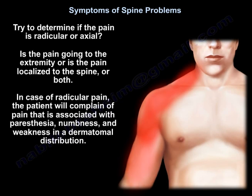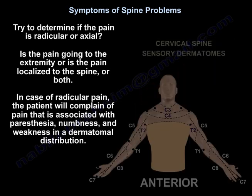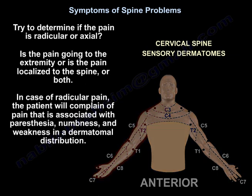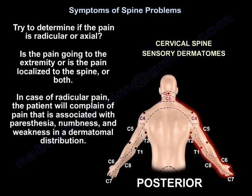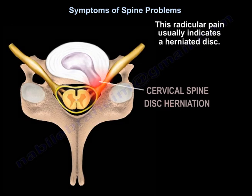Also, try to determine if the pain is radicular or axial. Is the pain going to the extremity, or is the pain localized to the spine, or both? In case of radicular pain, the patient will complain of pain associated with paresthesia, numbness, and weakness in a dermatomal distribution. This radicular pain usually indicates a herniated disc.